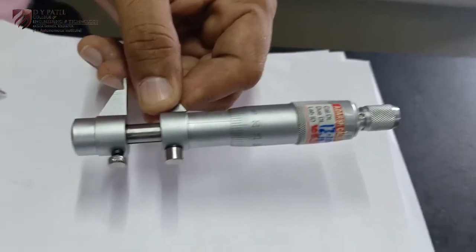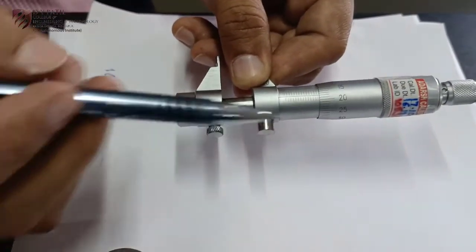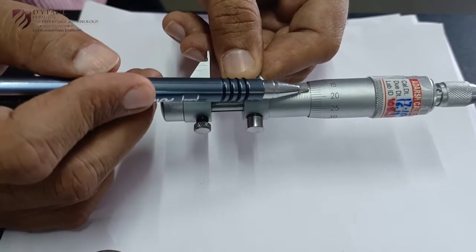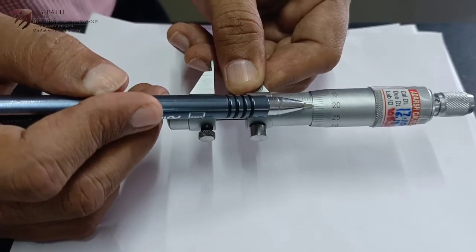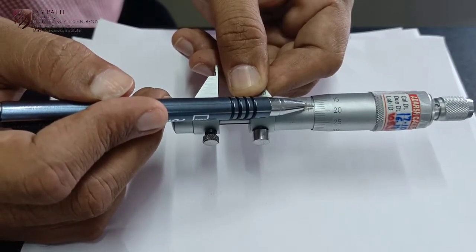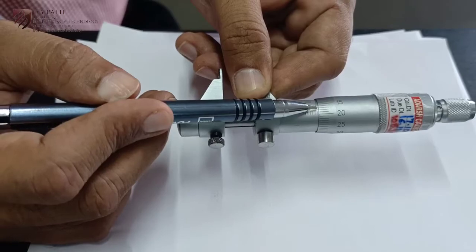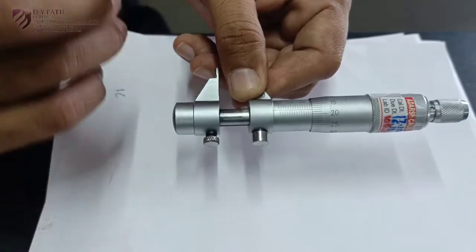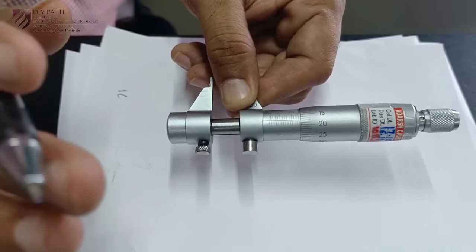So my main scale reading is 16mm and division which is above this is 20, this is 19 and this is 18 and this is 17. So division above this baseline is 17. So 17 is my circular scale reading.